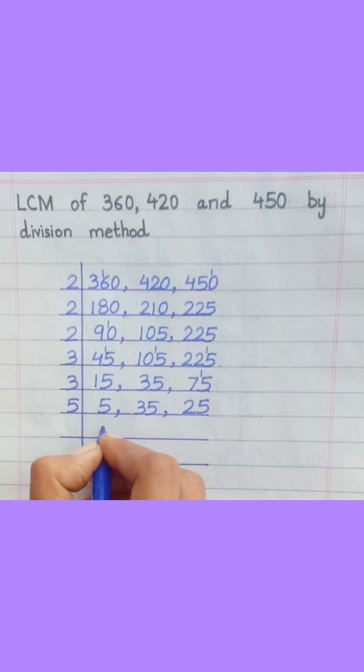5 ones are 5, 5 sevens are 35, 5 fives are 25. 5 ones are 5. 7 ones are 7.